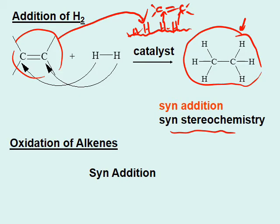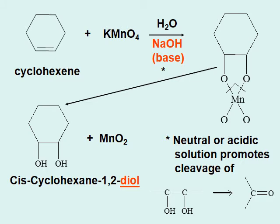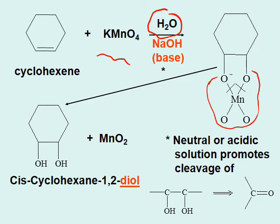Now we talk about oxidation reactions due to potassium permanganate. Potassium permanganate gives a series of different products depending on whether it is basic, neutral, or acidic. The top reaction is basic permanganate — sodium hydroxide is added, making the solution basic. In basic permanganate solution, syn addition takes place. It first forms a complex with MnO4⁻ where two oxygens bond from the same side.